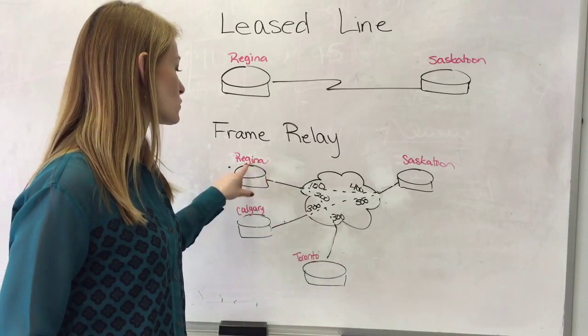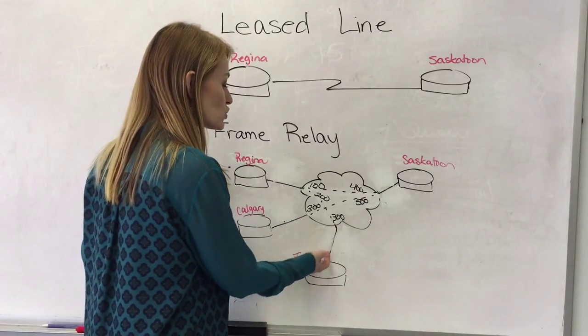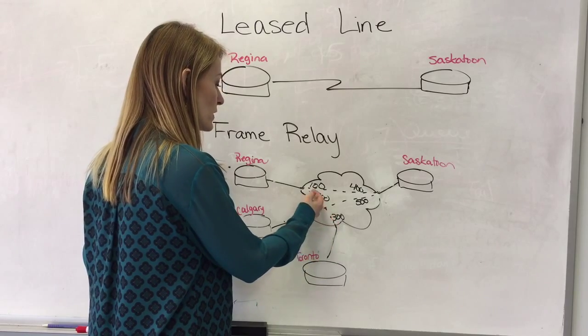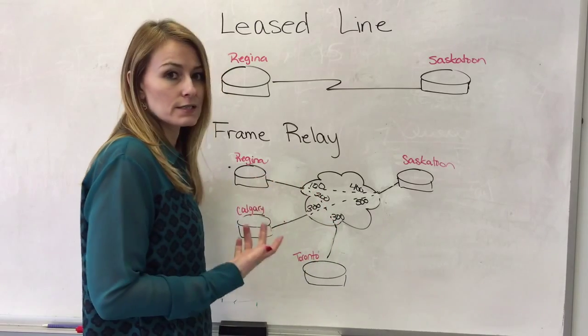So if Toronto is going to Regina, it's going to start on DLCI 300 and it'll come in on DLCI 200.